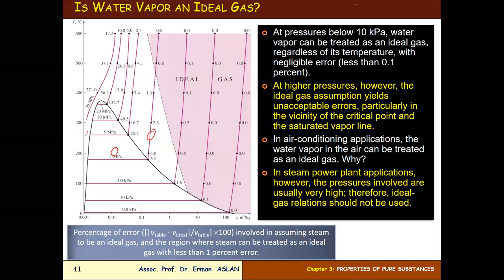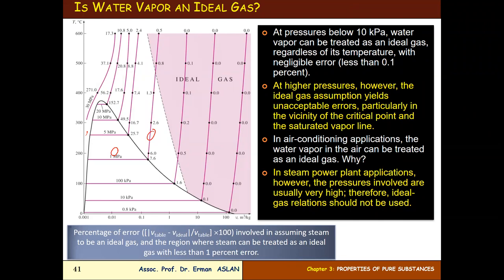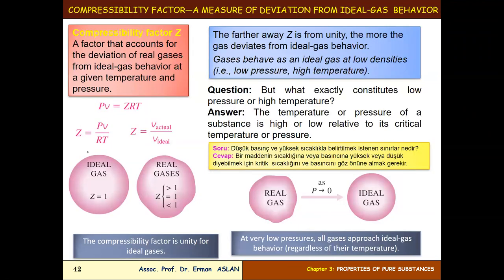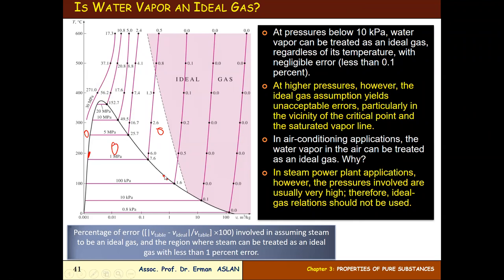What is an ideal gas? Is water vapor an ideal gas? We know the TV diagram — the compressed liquid region, vapor-fluid mixture region, and superheated region. In the superheated region, all substances are in the gas phase, so we focus on the superheated region when analyzing ideal gas behavior.